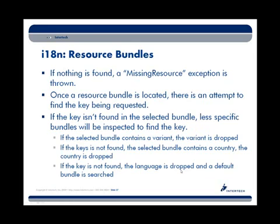Once the bundle is located, the same fallback logic applies to key lookup. If a key can't be found in the located bundle, it goes to less specific bundles — dropping the variant, then the country, then just the language, until it reaches the base default property file with no locale information.